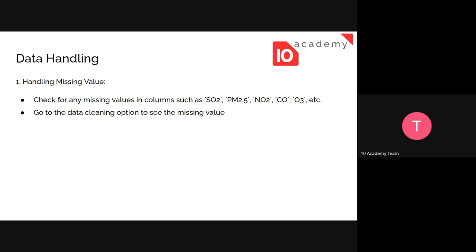The first step is handling missing values. We're going to have data collected using different methods — maybe from the government, from different websites and places. The data might not be perfect. If you go through this week's challenge details, you can see there are missing values in the temperature, sulfur dioxide, nitrogen dioxide, carbon monoxide, and ozone columns especially. You need to decide how you're going to deal with those missing values.